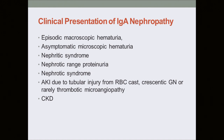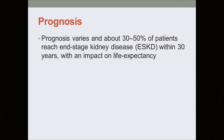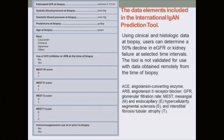Clinically, IGA nephropathy can present as almost anything, but the most common is asymptomatic microscopic hematuria and episodic macroscopic hematuria — the classical synpharyngitic variant. There can also be nephritic presentation, nephrotic syndrome, sub-nephrotic proteinuria without nephrotic syndrome, AKI, and sometimes it presents as CKD. The prognosis is very variable, but about 30 to 50 percent develop ESKD within 30 years.